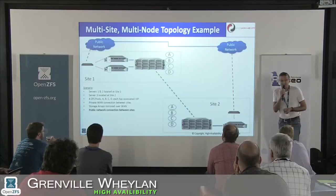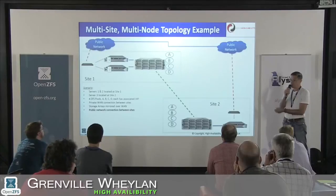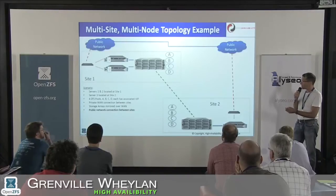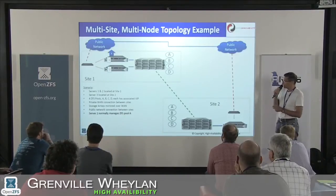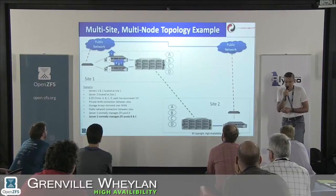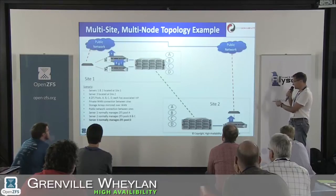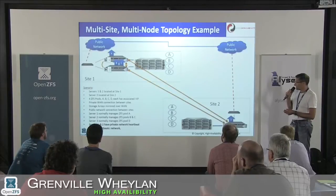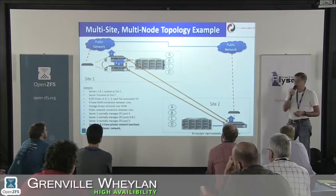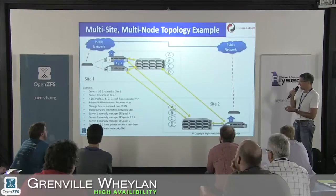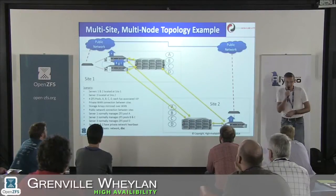Let's assume both sites have outside network connectivity — not just a private connection between the sites, but internet or some sort of VPN connection as well. Server one is running pool A, server two is running pools B and C as two separate services, and over on site two we've got pool D. All three servers can see each other via the private network and heartbeat between them. We've also got a disk heartbeat so all three systems can communicate via the disks, though the disk connections are also going over the same WAN connection, which is a single point of failure.